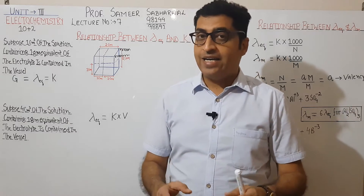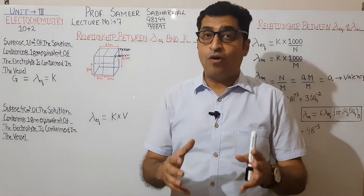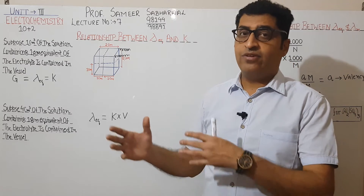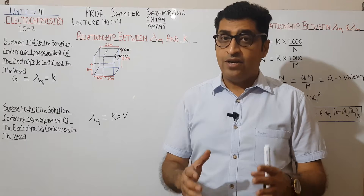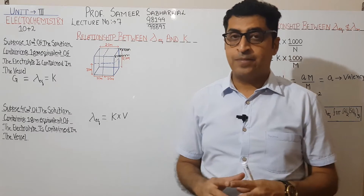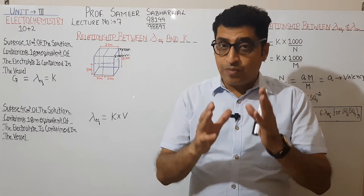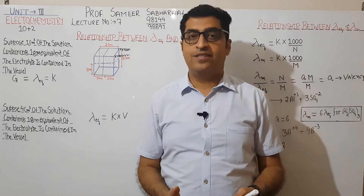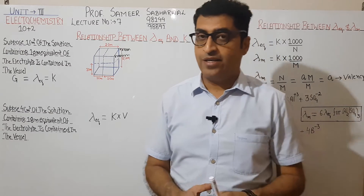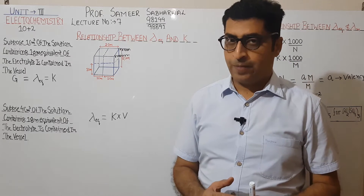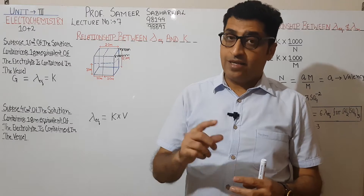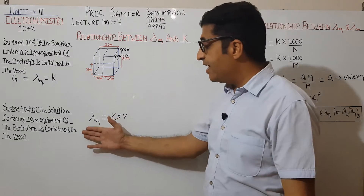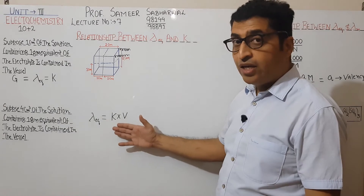In the second case, I dilute this solution so the volume of solution becomes 4 centimeter cube. Now I have a solution whose volume is 4 cm³ and 1 gram equivalent of electrolyte is present in it. Since 1 gram equivalent of electrolyte is present, its conductance is still equal to equivalent conductance. But the volume is 4 centimeter cube. The conductance of 1 centimeter cube is known as specific conductance.